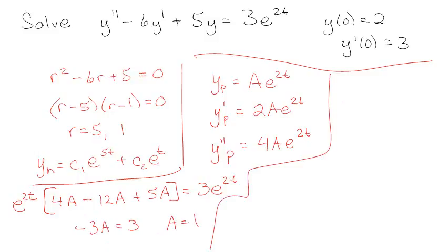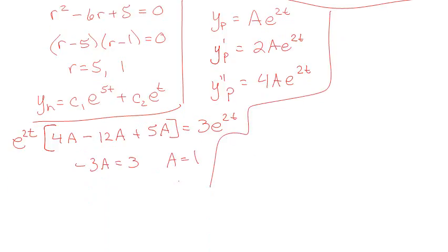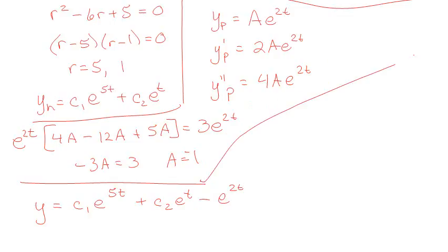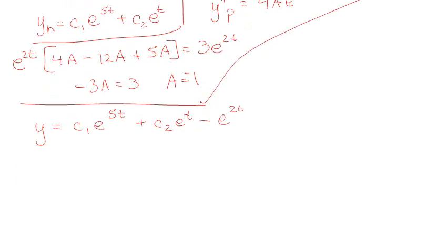So that means that I have a solution of, that my full solution is c1 e to the 5t, c2 e to the t, and then a negative 1, sorry, get all excited, and then minus e to the 2t. Lovely. Very exciting. Yay, answer. Okay. Then I apply my initial conditions. In order to apply initial conditions, that means I need to take the first derivative. Derivatives are for people who like math.